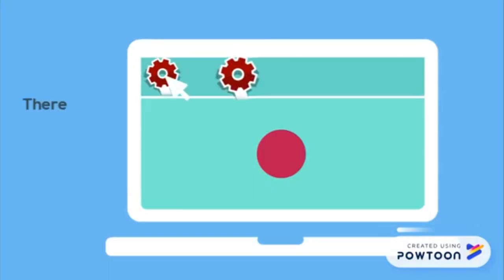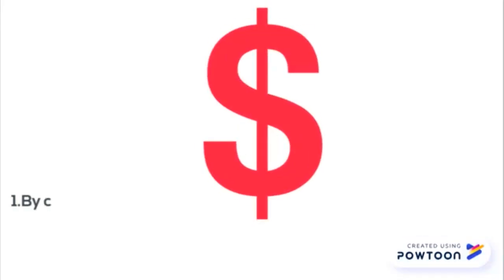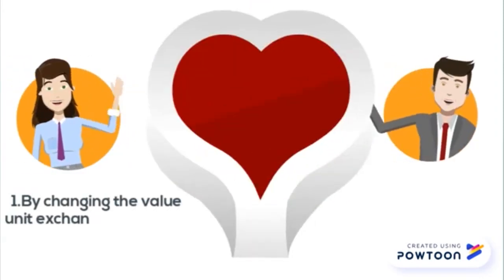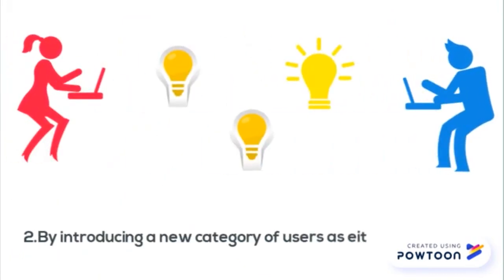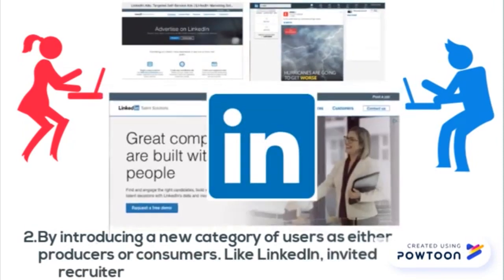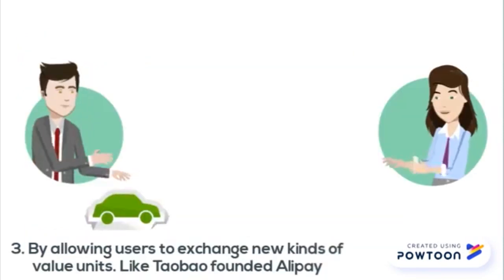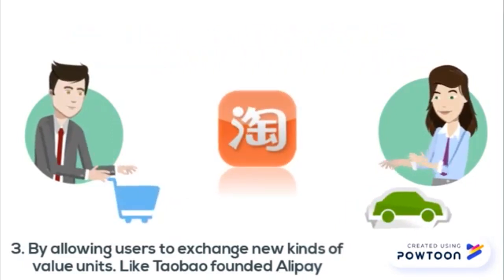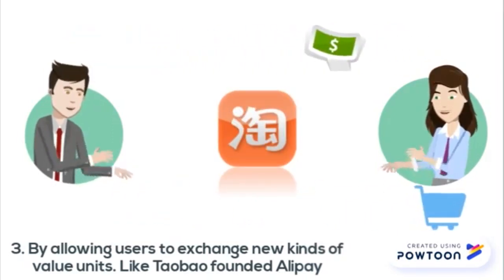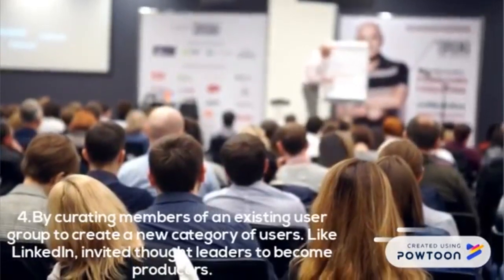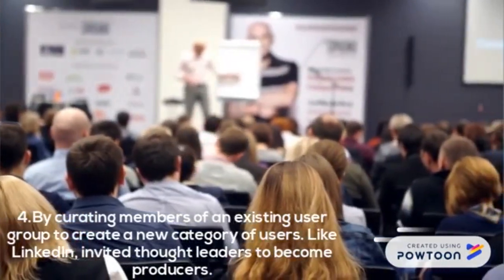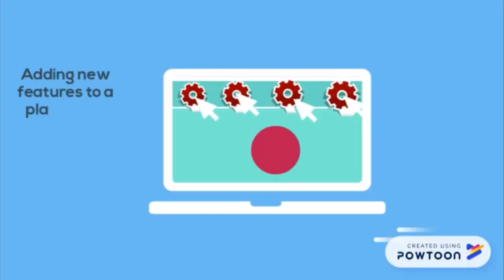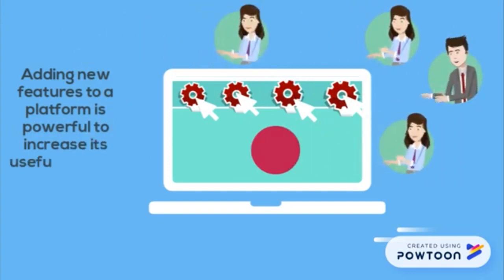LinkedIn went on to add further interactions: allowing recruiters to use the site to target candidates and ads to relevant professionals, and later allowing thought leaders and all users to post on LinkedIn for others to read, effectively turning LinkedIn into a publishing platform giving users more reasons to visit. There are several ways new interactions can be layered on top of the core interaction: by changing the value unit exchanged between existing users; by introducing a new category of users as producers or consumers; by allowing users to exchange new kinds of value units; by curating members of an existing user group to create a new category; and by adding new features to increase usefulness and attract more users.